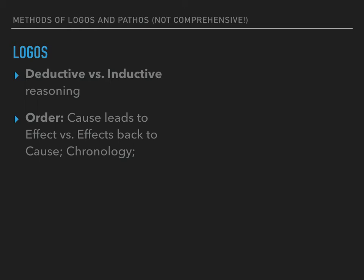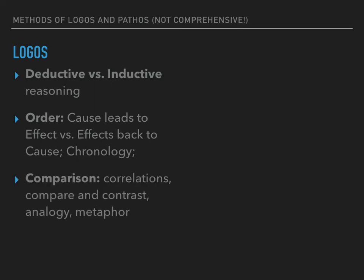Another significant and common logos strategy is inherently based in comparison. When authors talk about correlations, they're comparing two things and seeing if they can identify a relationship between them. Correlations can lead to identifying causes and effects, but not always. Sometimes comparisons are working in a slightly different way, such as when people compare and contrast two things as part of their evidence.